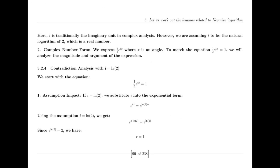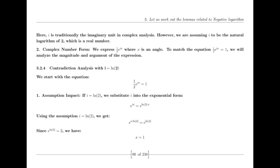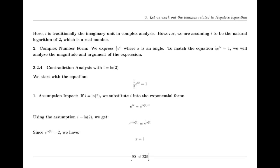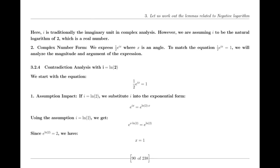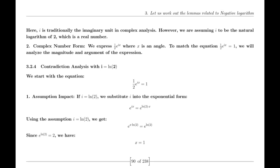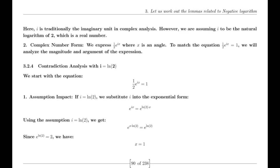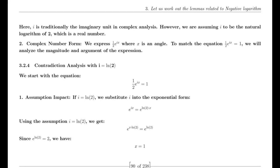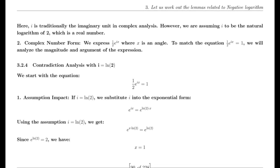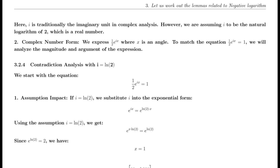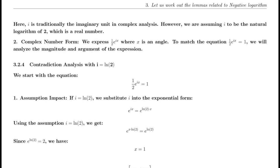The harmonic conjugate theorem states that if u(x,y) is a harmonic function, then there exists a function v(x,y) such that the complex function f(z) = u(x,y) + iv(x,y) is analytic. The function v(x,y) is called the harmonic conjugate of u(x,y). This theorem is fundamental because it shows how harmonic functions pair up to form analytic functions, which are the building blocks of much of complex analysis.